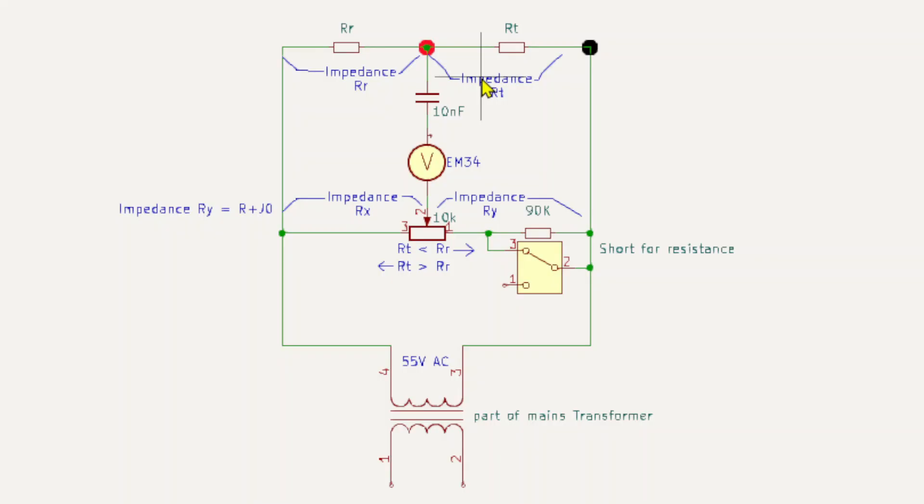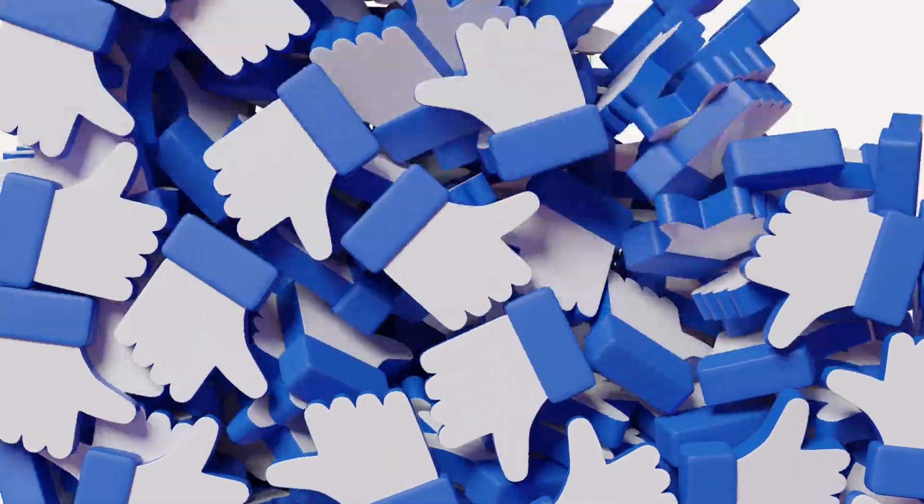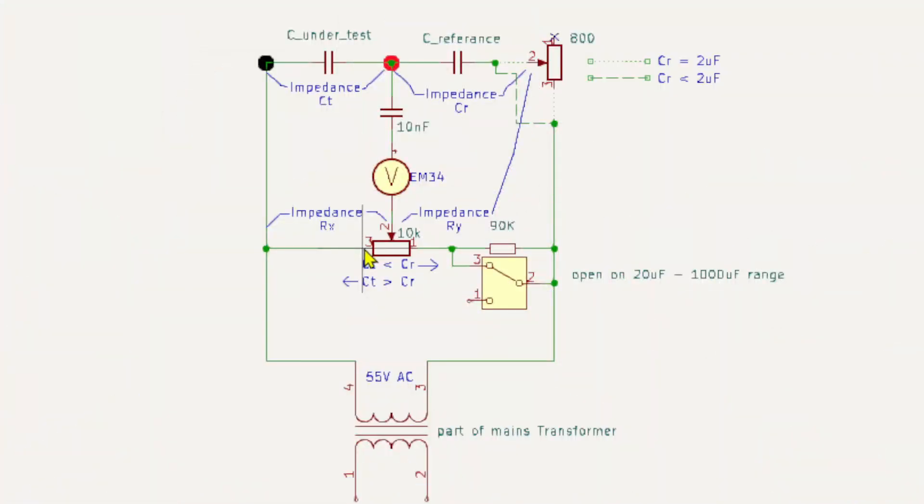So hope you've got that, and then we'll move on to the capacitance range, which is virtually the same because we will be considering impedances. Here we can see the bridge when it's switched into the capacitor measuring mode, and one thing you may notice straight away is the capacitor under test and the capacitor reference have swapped on the resistance range.